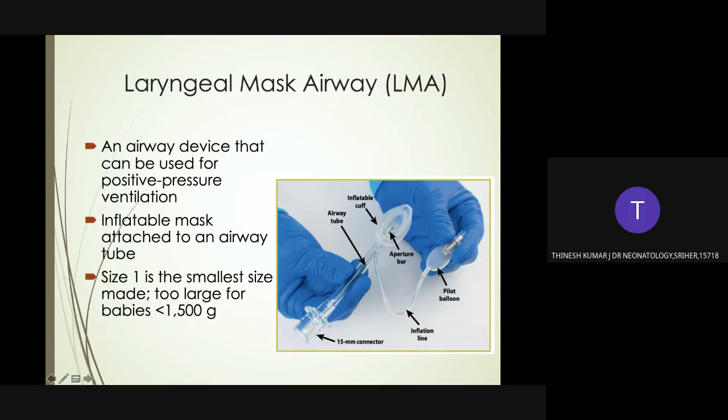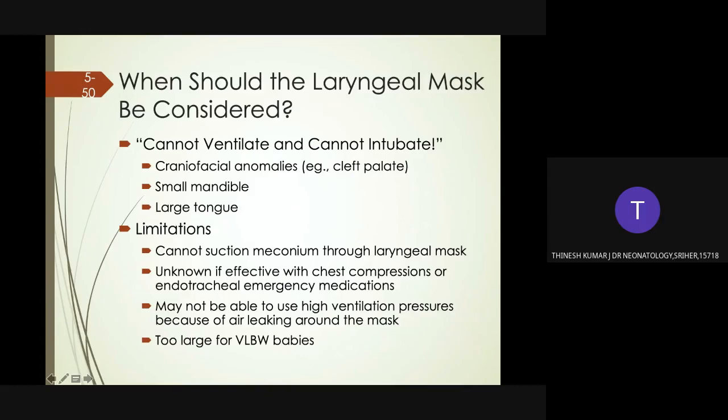The laryngeal mask airway is a device that can be used to provide positive pressure ventilation — it has an inflatable mask attached to an airway tube. Size 1 is the smallest size and is too large for babies less than 1500 grams. The laryngeal mask airway has a 15 mm connector to connect with the positive pressure ventilation device, an airway tube, and an inflatable cuff. The laryngeal mask should be considered when you cannot ventilate and cannot intubate the baby, such as with craniofacial anomalies, cleft palate, small mandible, or large tongue.